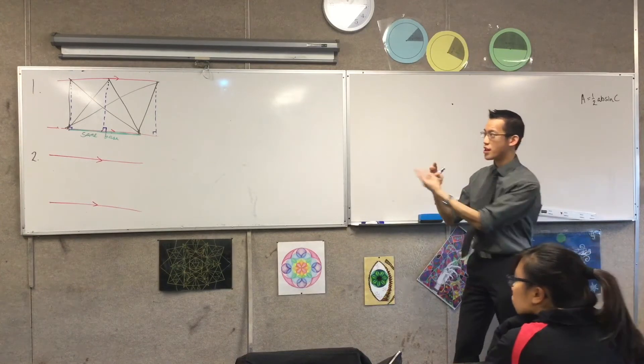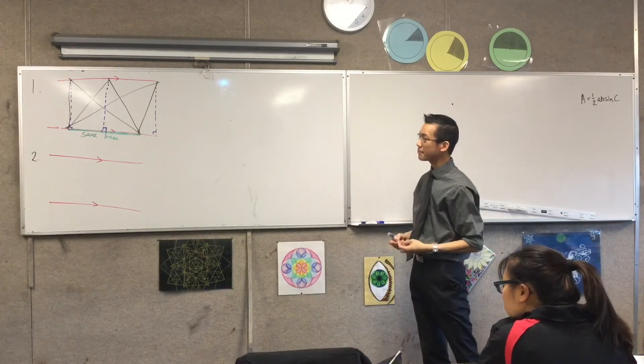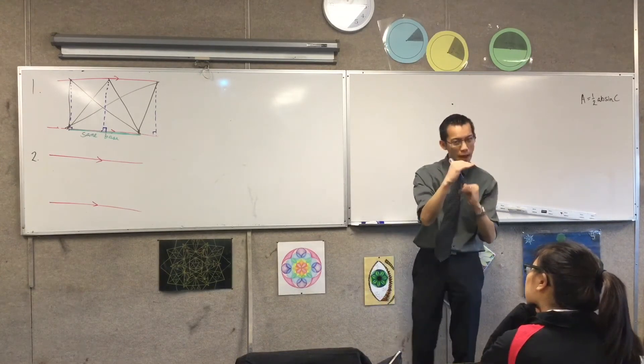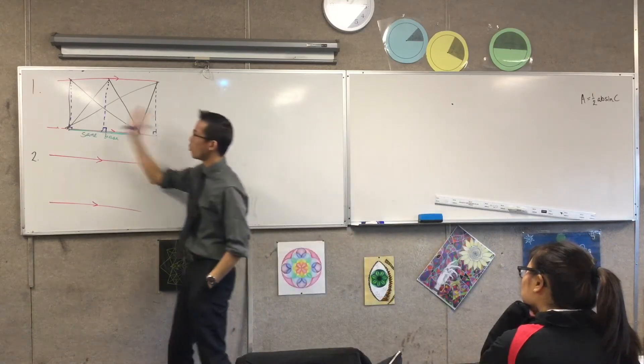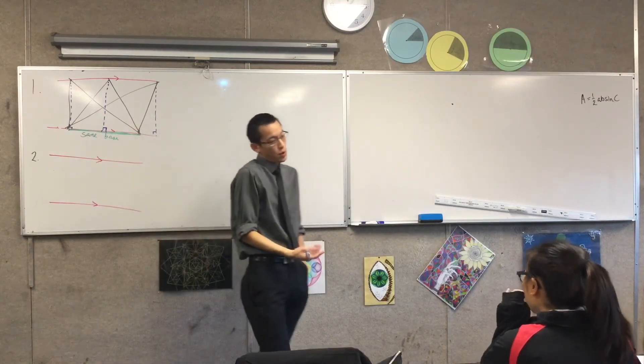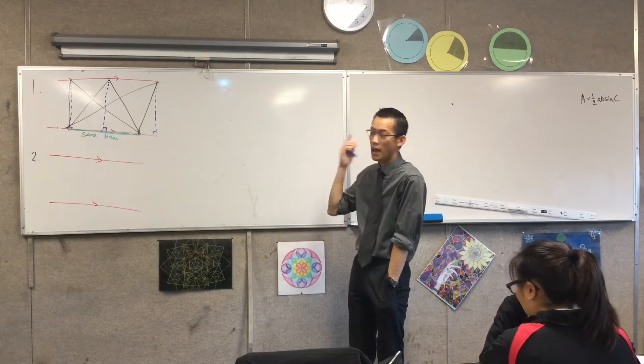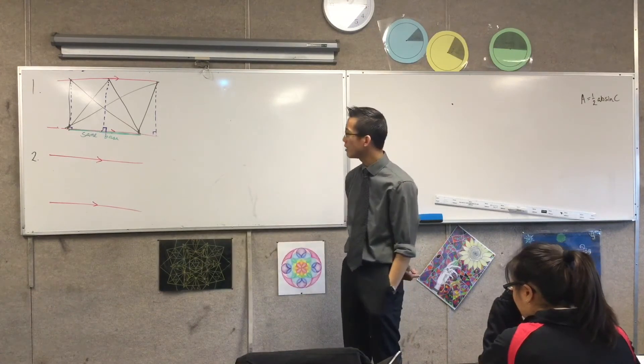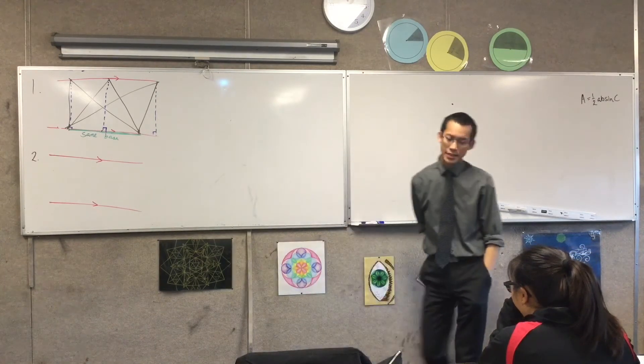Again, they're all triangles. They all share that same green base down there. And because they're between those parallel lines, that's what gives them all the same perpendicular height. So, therefore, same base, same perpendicular height, equal in area. There's the first diagram.